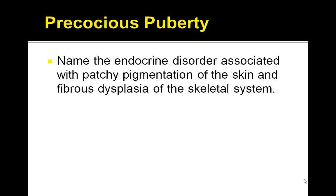Name the endocrine disorder associated with patchy pigmentation of the skin and fibrous dysplasia of the skeletal system. That is McCune-Albright syndrome. These are just a few things you want to keep in mind as you are thinking about precocious puberty.